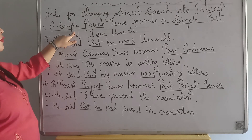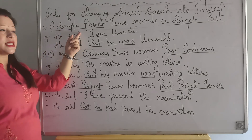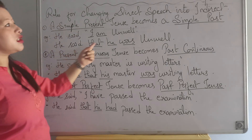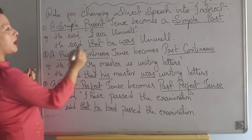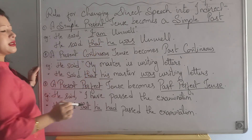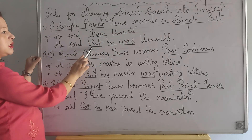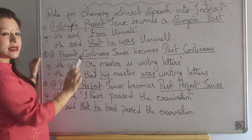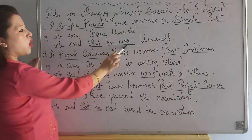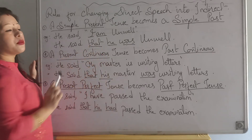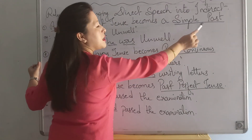First is simple present tense, which you have to change into simple past tense. If a sentence in direct speech is in simple present tense, you have to change it into simple past tense. For example, he said, 'I am unwell.' Here 'I' is a pronoun and 'am' is present tense. When you change this into indirect speech, you write: he said that he was unwell. So 'I' becomes 'he' and 'am' becomes 'was.' Simple present changes into simple past.